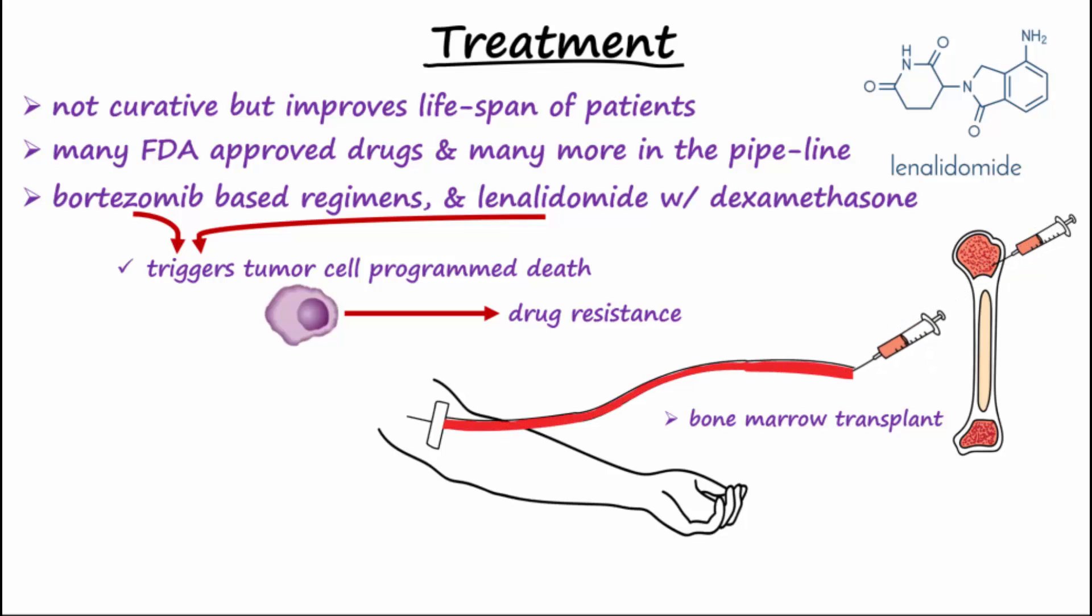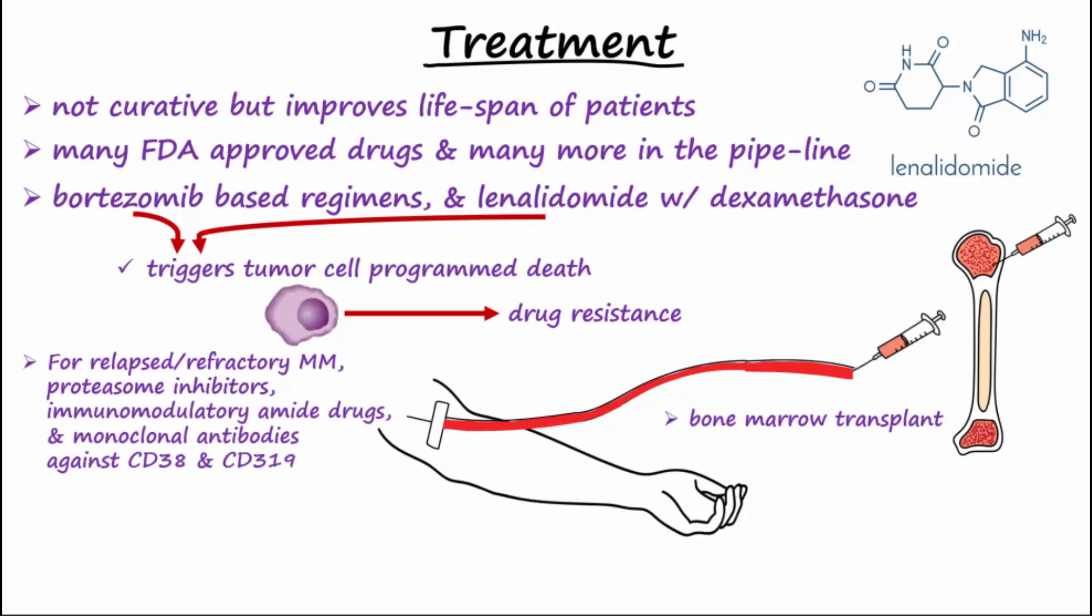For relapsed refractory multiple myeloma, proteasome inhibitors, immunomodulatory amide drugs, and monoclonal antibodies against CD38 and CD319 may be used.